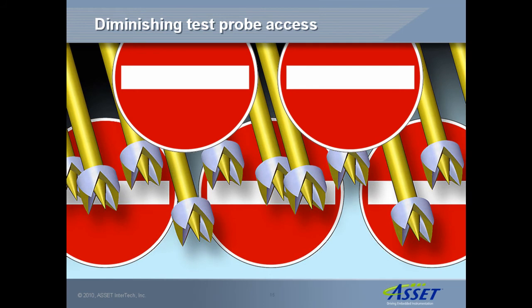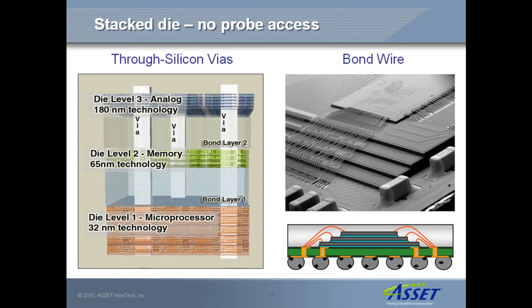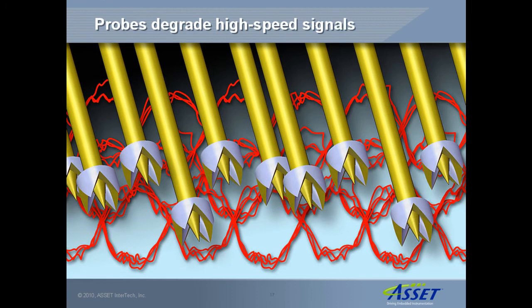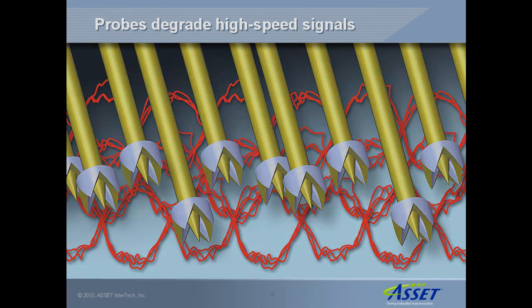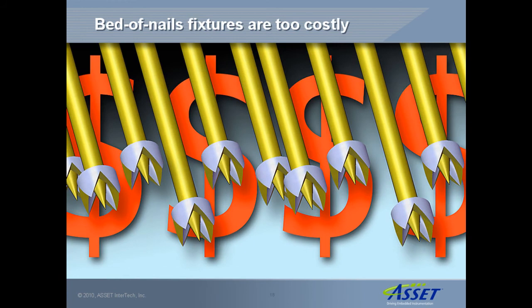Diminishing test access is an increasing problem for traditional probe-based board test solutions, such as ICT and MDAs. High-density multi-layered boards with BGAs, 3D chip packages and other inaccessible circuit nodes prevent probe testing. Attempting to probe high-speed buses causes signal distortion — you probe it, you break it, as they say. And the cost of in-circuit test fixturing is difficult to justify with ever shorter product lead times and life expectancies. It's also impractical for board prototyping and field return repairs.